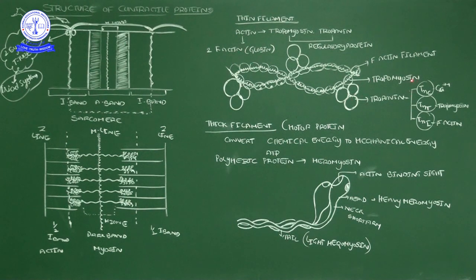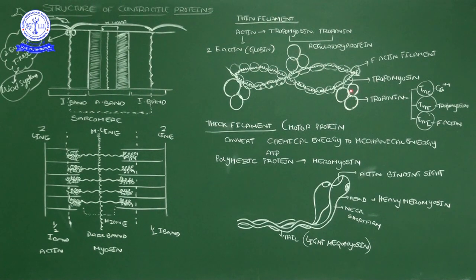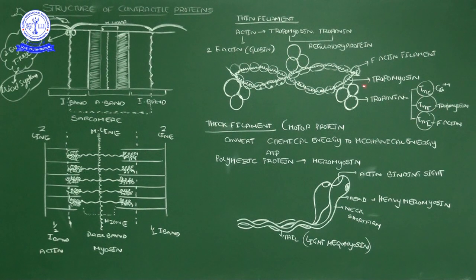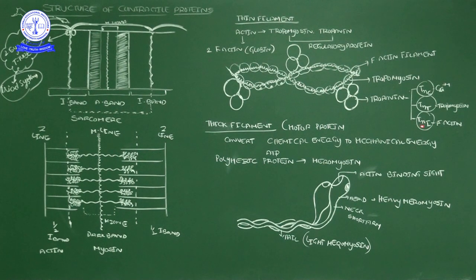TN indicates troponin. What is TNC? C indicates the calcium-binding subunit. This is the subunit of troponin that allows calcium ions to bind. Calcium ion binding gives the chance for muscle contraction — without calcium ion involvement, muscle should not show binding. TNT: T indicates tropomyosin, so this is the tropomyosin-binding subunit of troponin. TNI: I indicates I-band — it attaches with the I-band. These three subunits of troponin play a role in muscle contraction.